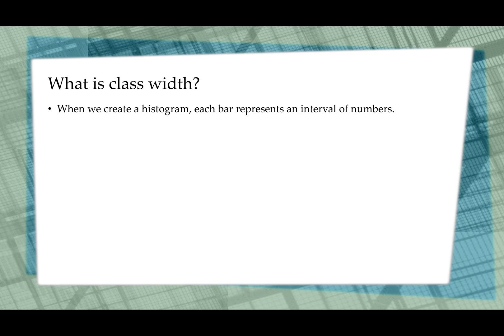So if we were to write it out, it would always be either parenthesis 1, 3 or whatever it is, bracket, or it could be including the 1, but not including the 3. It only includes one of the endpoints. The intervals are called the classes. And each class is the same size, and that size is called the class width.